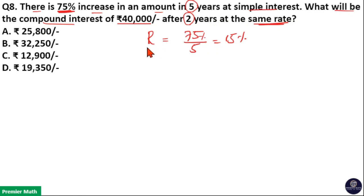So the rate is equal to 15%, that means 15 by 100. 5 goes 3 times in 15, 5 goes 20 times in 100. So 20 units is the principal and 3 units is the interest.